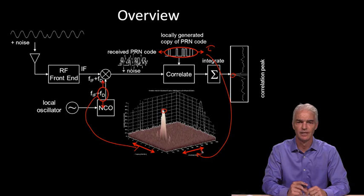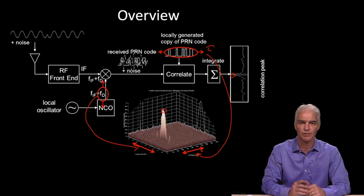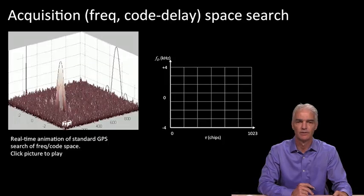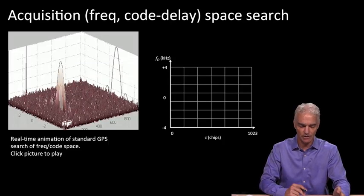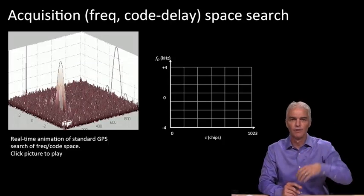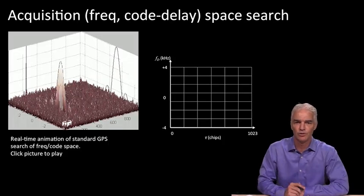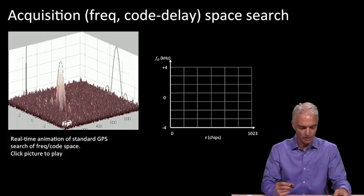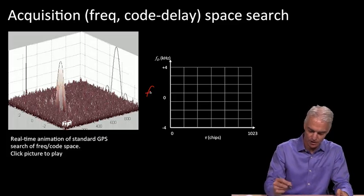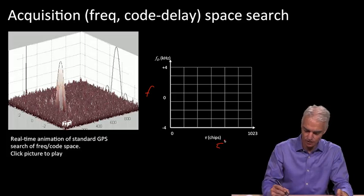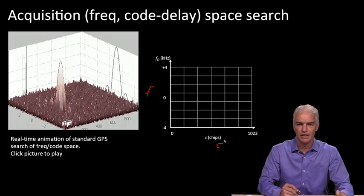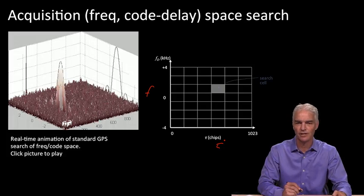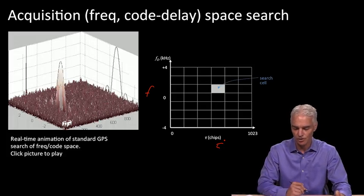So we're searching over this two-dimensional axis — that's what the acquisition search space is. There it is on the left. If we look at it from the top, what you can imagine is something like a chessboard, where on one axis we've got the frequency and on the other axis we've got the code delay tau. We can grid it up like a chessboard and we'd have to search each of these cells. We call each of these a search cell.